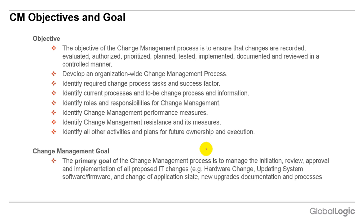The main objective of change management is to ensure that changes are recorded. Evidences are very important — whatever changes we have done, we must keep a record so that when the person who made the change is no longer available, another person can use the previous references to understand what changes were made and take care of new changes accordingly. The main objective is to have changes evaluated, recorded, authorized, prioritized, planned, implemented, documented, and reviewed in a controlled manner.